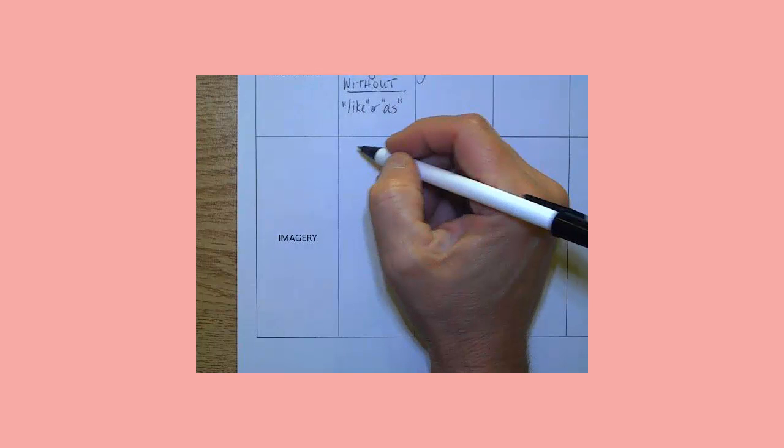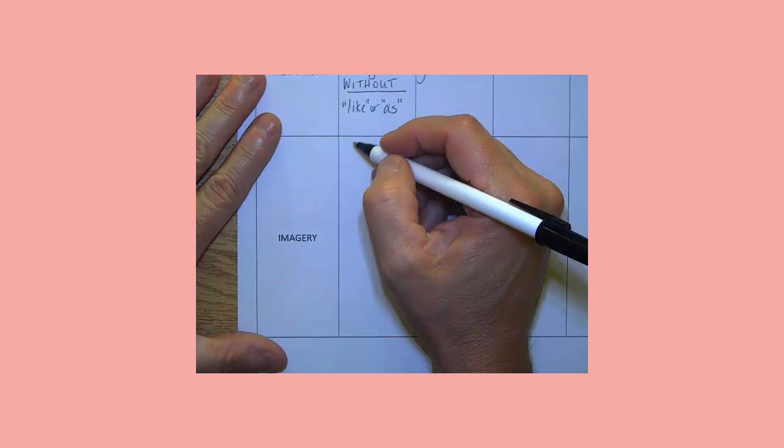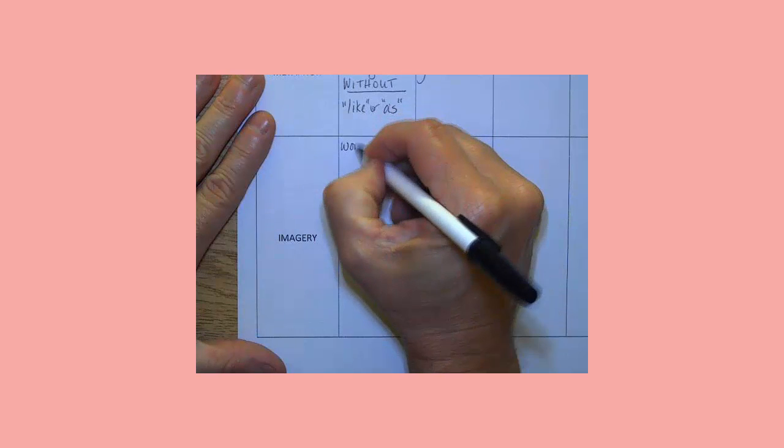Imagery is when you use words or sentences that make your mind experience the five senses. Let's write this down. This is a big one. That's why I gave it a big box.